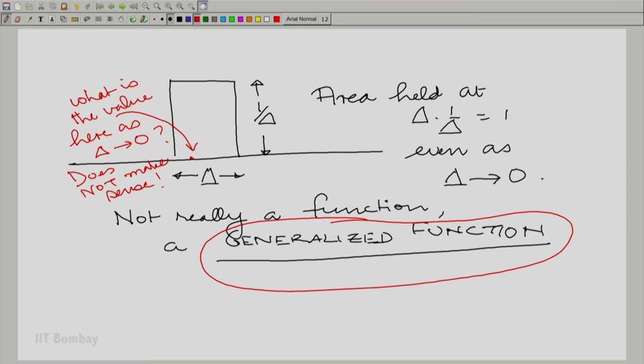Now we give this particular generalized function a name. We call this an impulse and if you want to be very particular you should say a unit impulse. Here unit refers to the area that has been encapsulated in that impulse. So an impulse is a very interesting object. It encapsulates a nonzero finite area, but with 0 width.